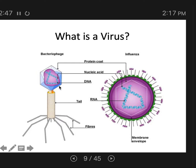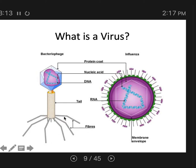You have the DNA or RNA — the genetic material — then you have the protein capsid protecting it. That's all you need to have a virus. Actually, there are three basic components: the genetic material, the protective protein case, and then spikes or attachment proteins. The attachment proteins help the virus attach to the cell. In this bacteriophage, those are the fibers, which attach to the cell it's going to infect.